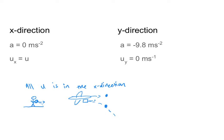In the x direction, we assume that acceleration is zero and all of our initial velocity is in that direction. Similarly, in the y direction we assume that acceleration is negative 9.8, as it always is in free fall, and we assume that our initial velocity is zero — since all of our initial velocity is in the x direction. So that's a lot of information. Let's go ahead and actually solve a problem.